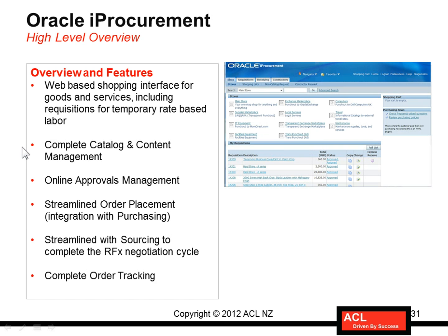To recap what we have just seen: it is a web-based shopping interface for goods and services, including requisitions for temporary rate-based labor. We have seen how a requisitioner can submit a request for temporary labor. Then there is complete catalog and content management — I have shown you the catalog and contents after they have been defined, but they can be managed through a separate responsibility called catalog administrator, through which one can define new catalogs, the items within them, and the categories within those catalogs.